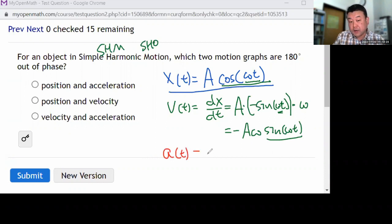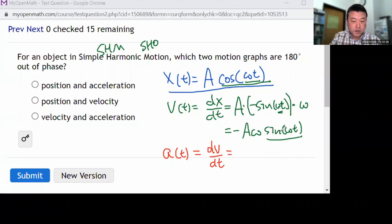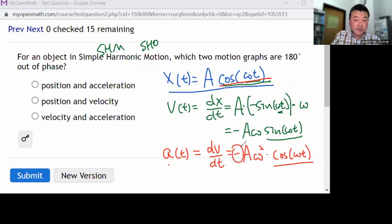Sine and cosine are 90 degrees out of phase with each other, so the velocity is not the answer here. Let's go to acceleration. You get acceleration the same way you get velocity, you take the time derivative of velocity to get acceleration. Derivative of sine is cosine, so it's going to be minus A omega squared times cosine of omega t. So I have the same function back for acceleration with a minus sign, which will give me a trig function that's 180 degrees out of phase. So the answer here should be position and acceleration.